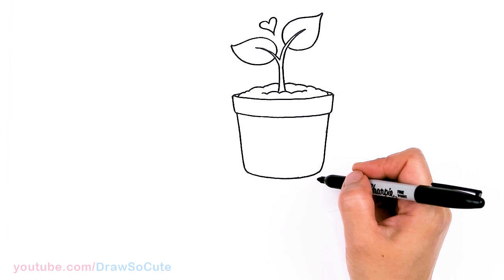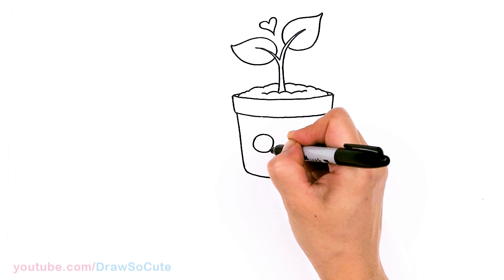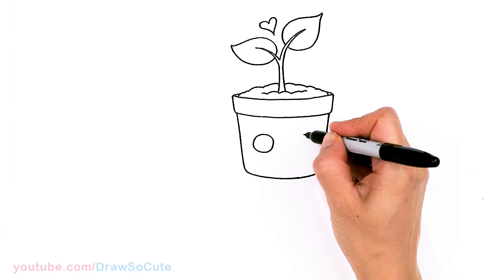All right, so then now let's bring the pot to life. So right in this area I'm going to draw a big circle. Maybe they could be vines or a flower, it's all up to you. There's so many options. So another circle by right here.